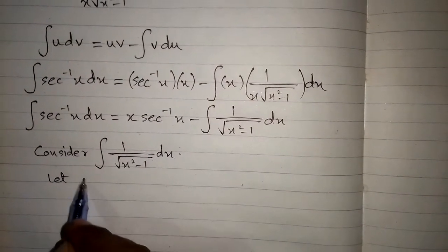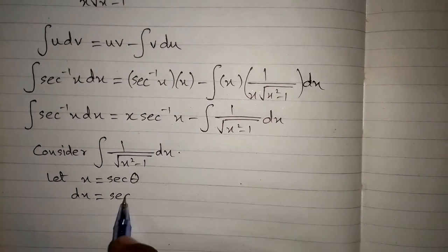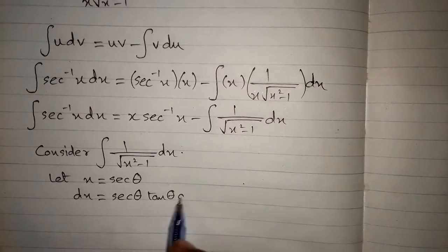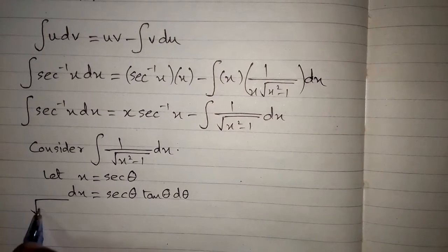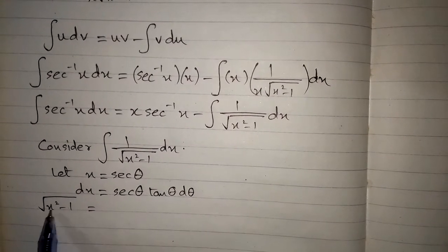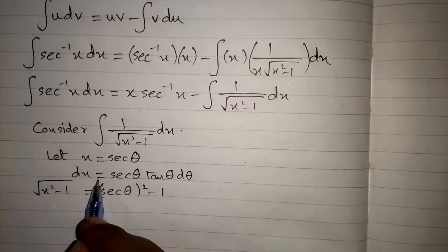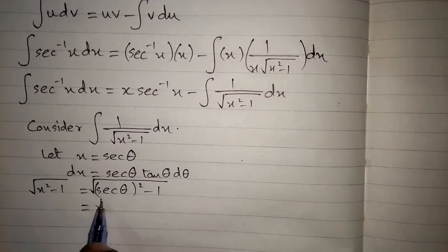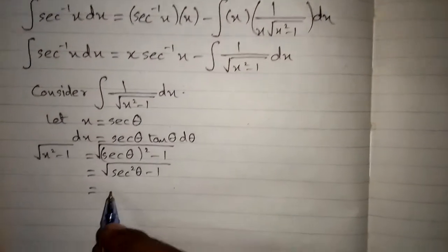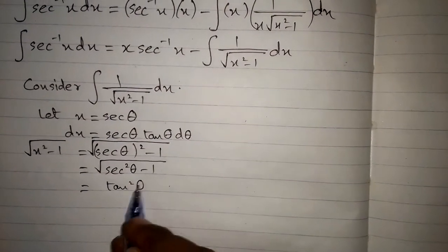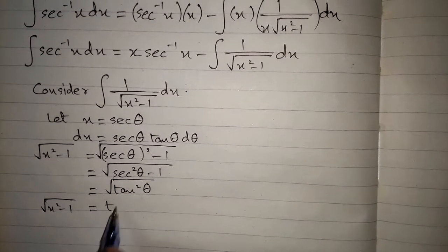Let x equal to sec theta, so dx equals sec theta tan theta d theta. Then square root of x squared minus 1 equals square root of sec squared theta minus 1. Since sec squared theta minus 1 equals tan squared theta, we get square root of x squared minus 1 equals tan theta.